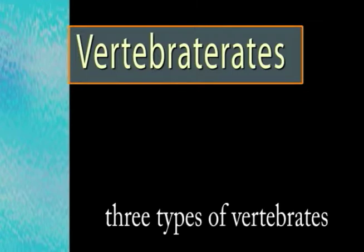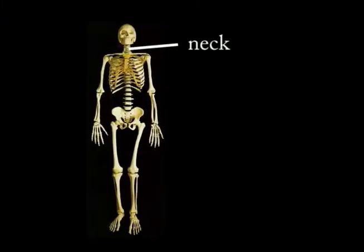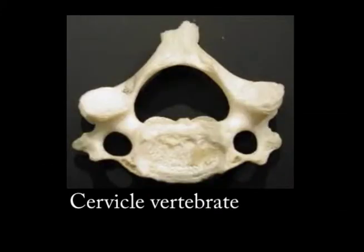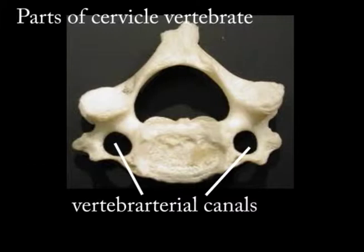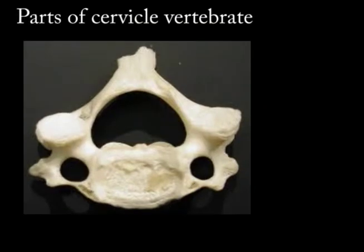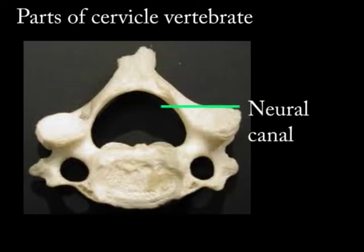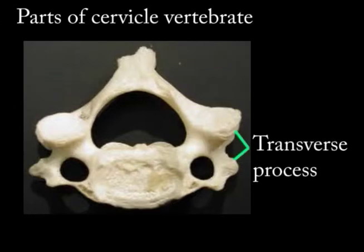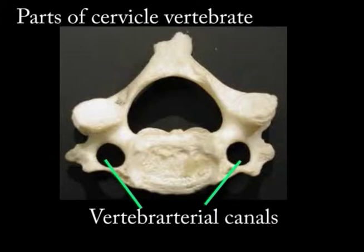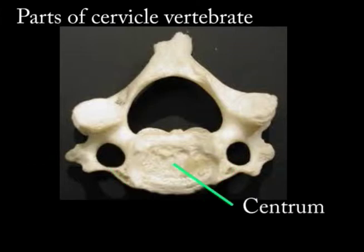The three types of vertebrae. Those found in the neck are called cervical vertebrae. They can be identified by the vertebral arterial canals. Parts of cervical vertebrae include: neural spine, neural canal, transverse process, vertebral arterial canals, and centrum.